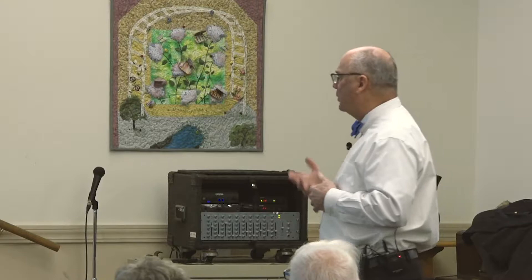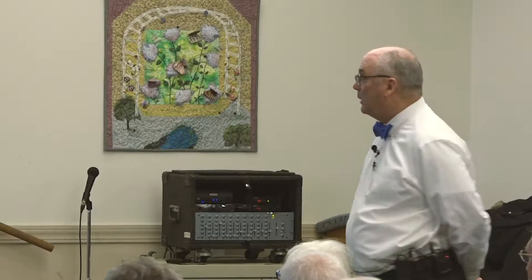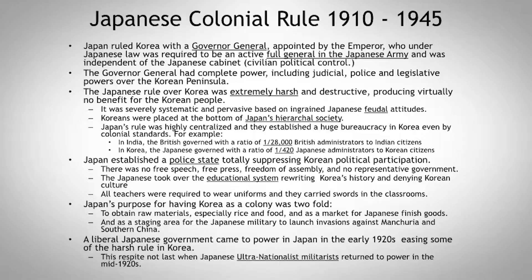The ratio of administrators is striking: in India, the British ruled with a ratio of one British official to 28,000 South Asians. In Korea, the Japanese ruled with a ratio of one Japanese administrator to 420 Korean citizens — really, really heavy-handed. They established a police state totally suppressing Korean political participation. There was no free speech, free press, freedom of assembly, and no representative government whatsoever.